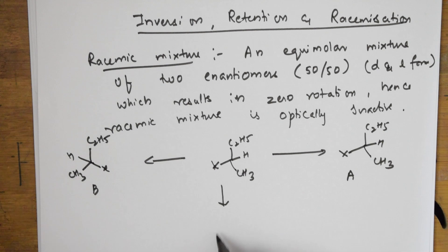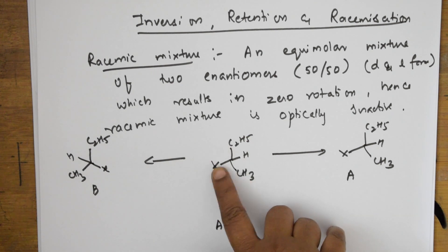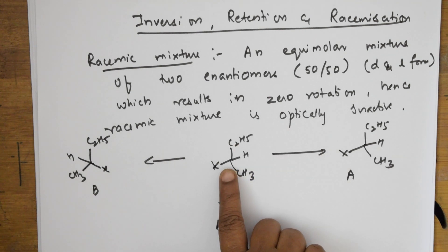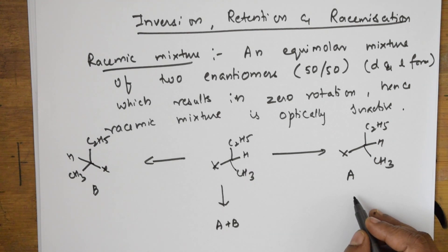The mixture of A and B together. If the molecule after the reaction, if the configuration of this molecule is retained, X is here, C2H5 is here, H is here, CH3 is here. If the configuration is retained, then it is called retention.